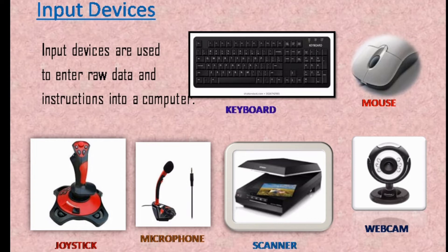The first input device is the keyboard. A keyboard is the most commonly used input device; it has keys on it that are pressed to type. The next is the mouse, also a very commonly used input device. It is used to point at things on the monitor. The arrow on the screen is called a pointer, which moves when we move the mouse. Click, double click, right click, drag, and scroll are different mouse actions.